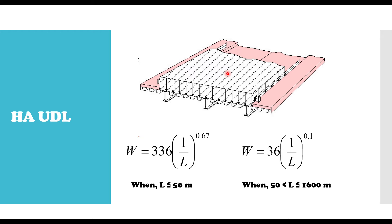When your loaded length is more than 1,600 metres, the value of W is obtained from what we call the HA UDL intensity curve, and that is also where the formulas come from. However, when the loaded length exceeds this range, you have to consult the literature and look at what scholars have discussed, or use other more numerical means.